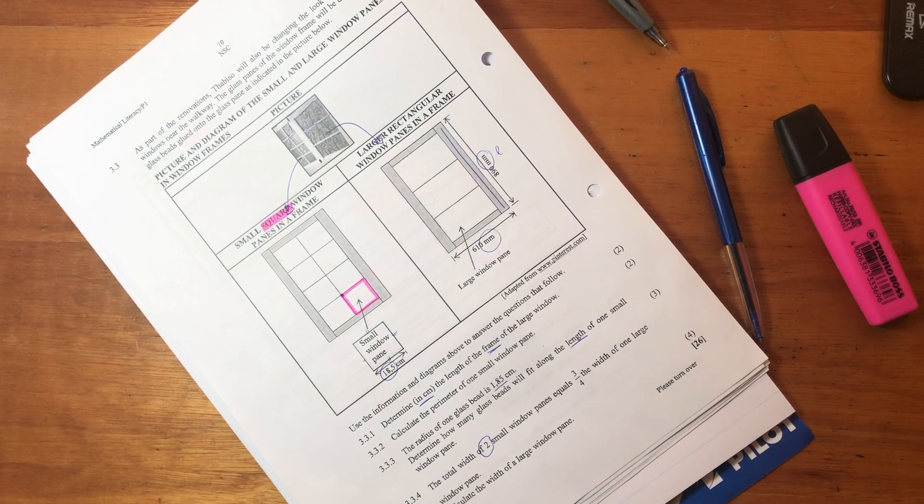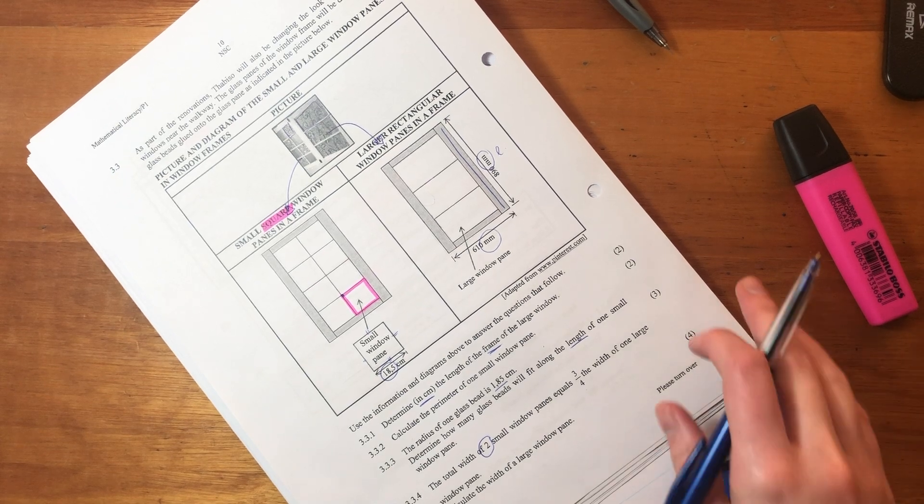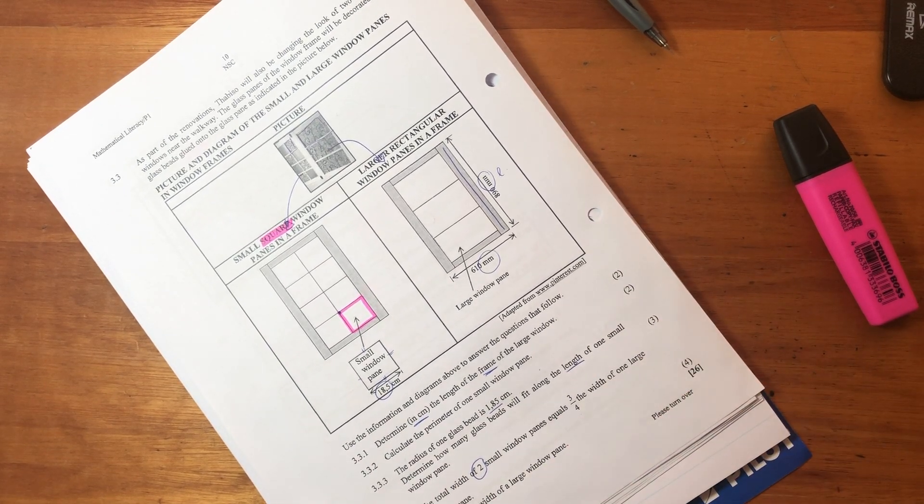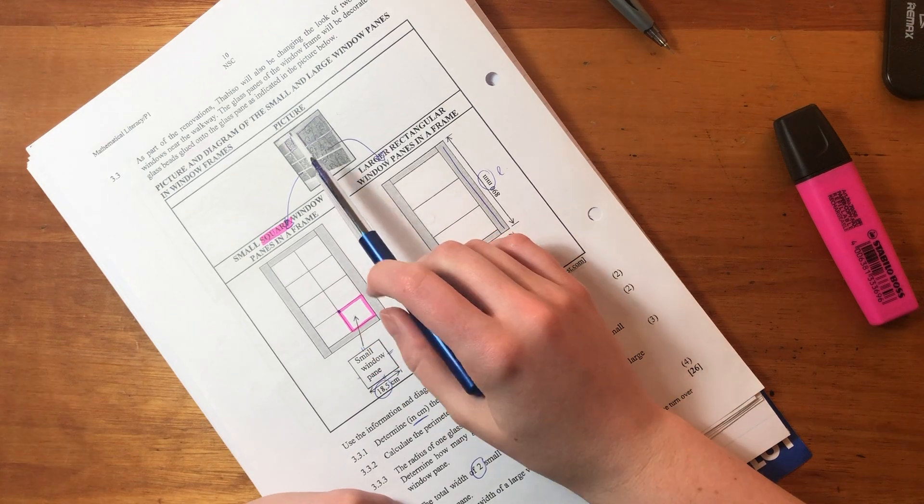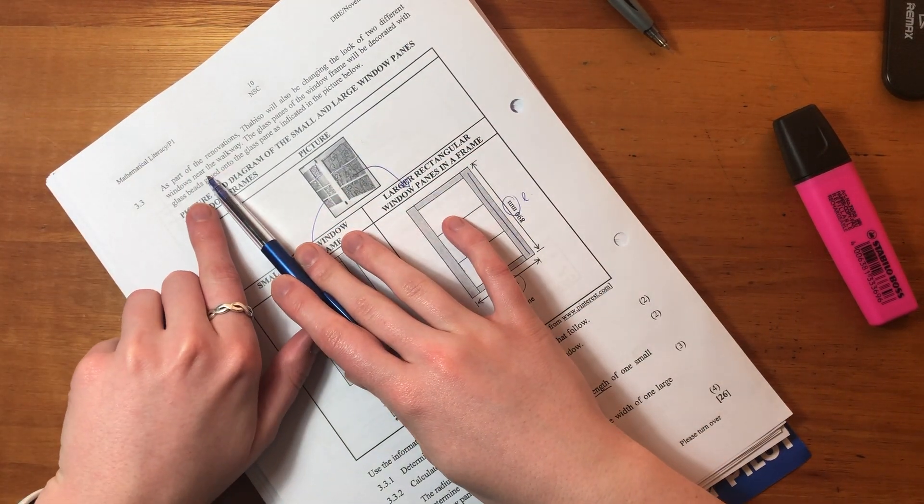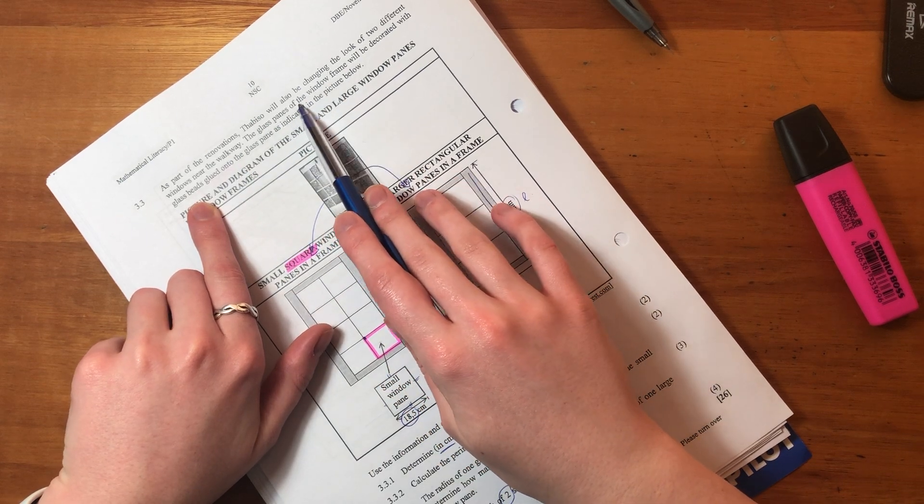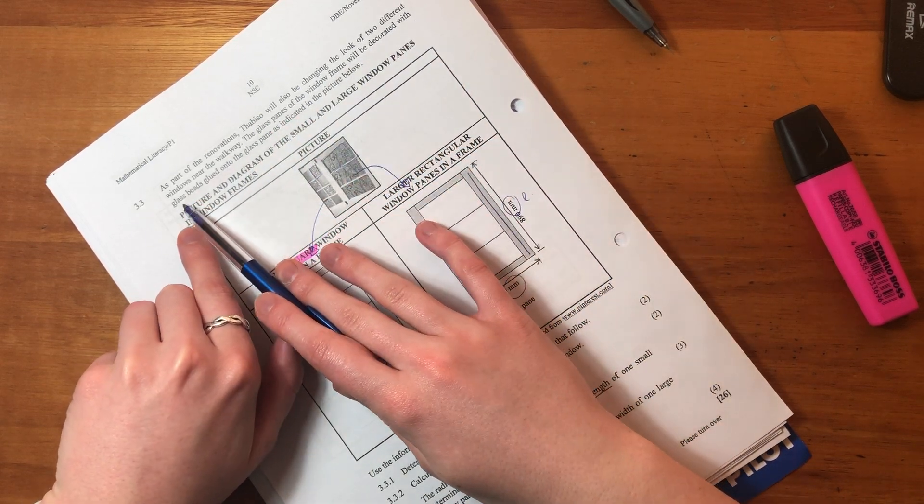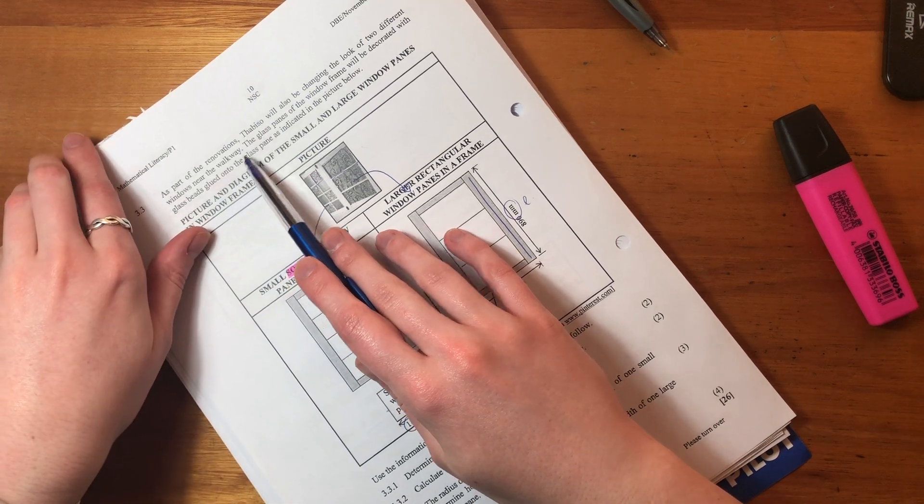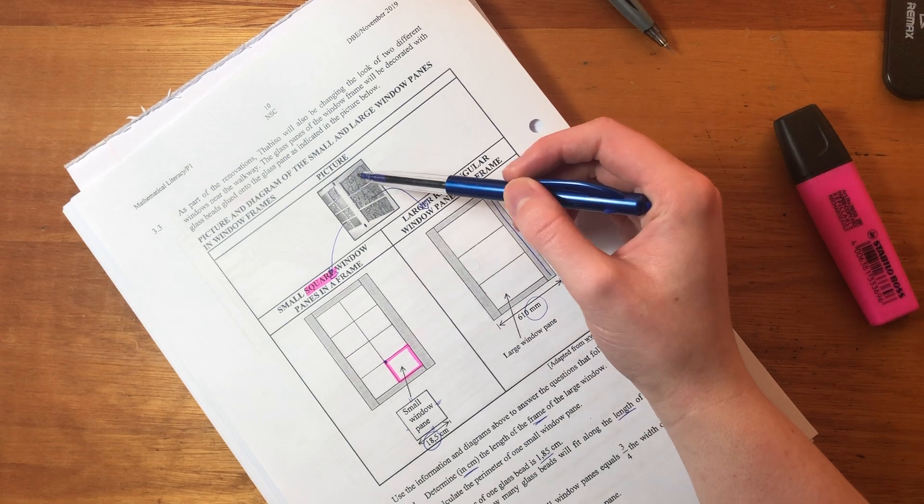Hey everyone, we're moving on to question 3.3. Let's just read the scenario and then jump into the questions. So it says, as part of the renovations, Tabitha will also be changing the look of two different windows near the walkway.